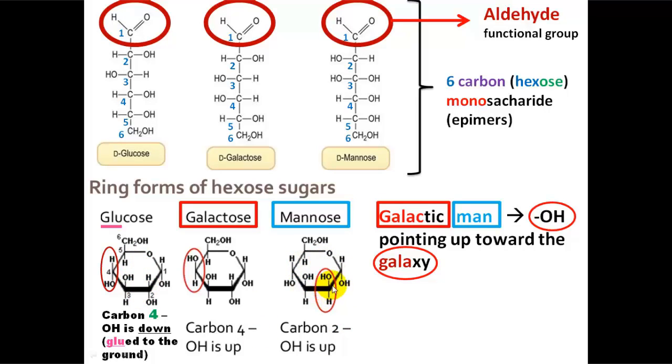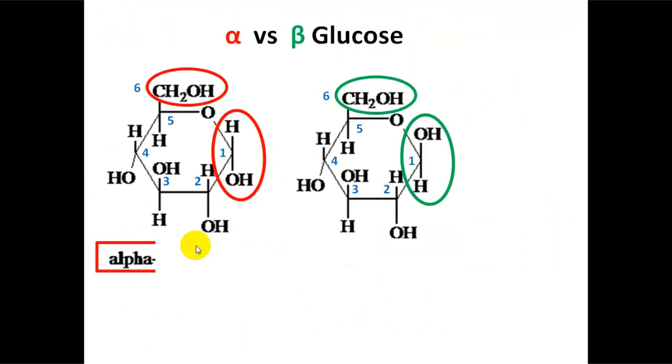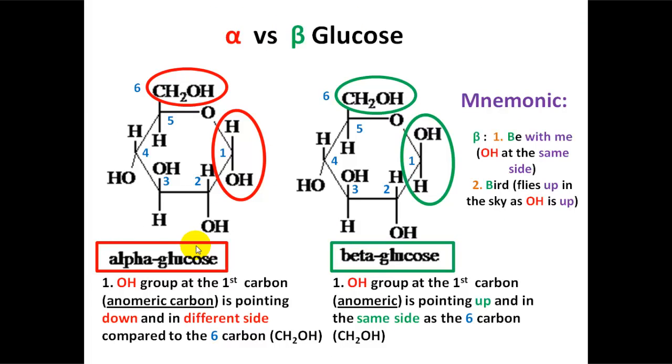Now let's see the difference between alpha and beta glucose. Alpha glucose has its OH group at the first carbon or the anomeric carbon pointing down and in a different side compared to the sixth carbon, the CH2OH group, while beta glucose has its OH group at the first carbon pointing up and in the same side as the sixth carbon. A great mnemonic for this is: beta is for 'be with me' so the OH at the same side, and beta for bird which flies up in the sky as OH is pointing up.